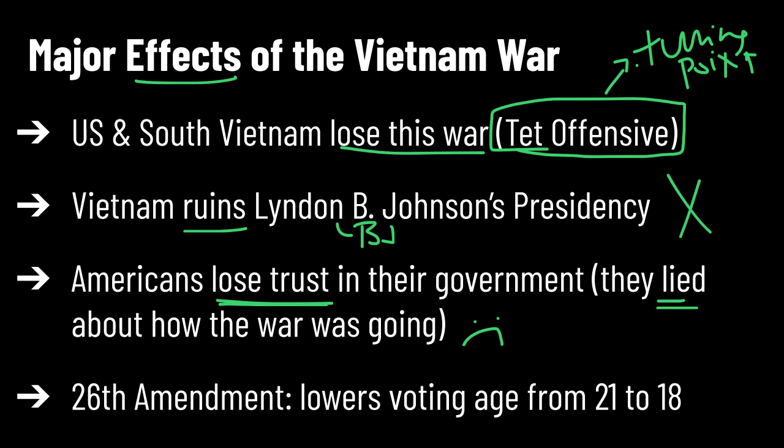Finally, here's something positive to end on: the 26th Amendment. It's the reason 18-year-olds can vote today — it lowered the voting age from 21 to 18. This is really important because people who were being drafted to fight in the Vietnam War were 18 or 19 years old, and during this time they couldn't even vote for the politicians sending them there. So you have these young people during Vietnam to thank for your voting rights at 18.